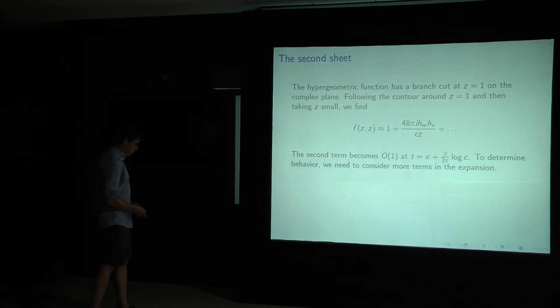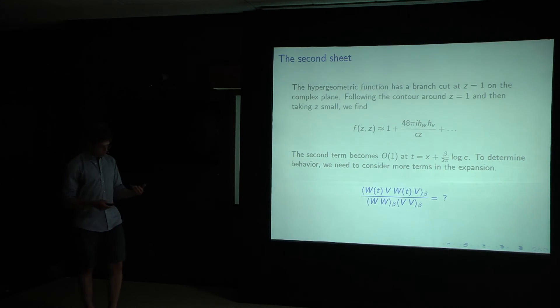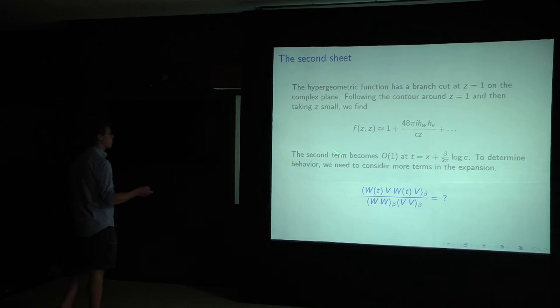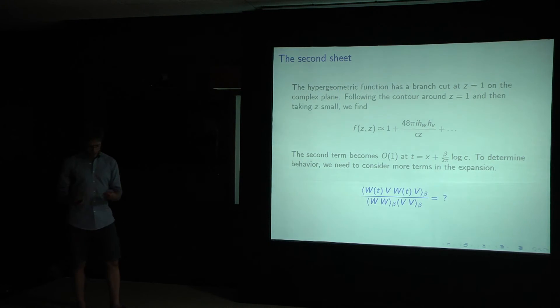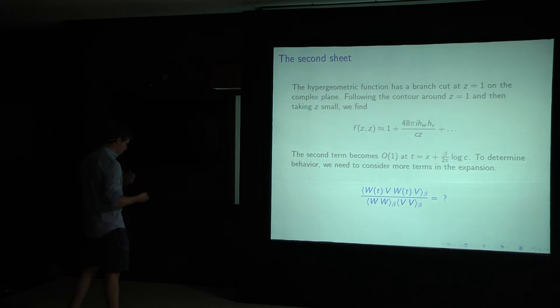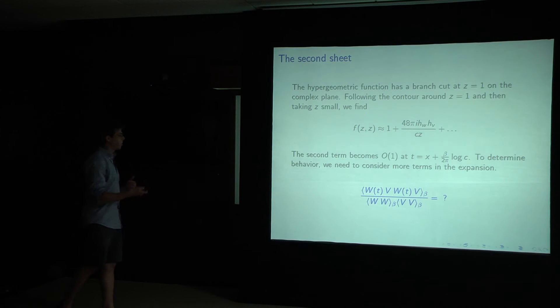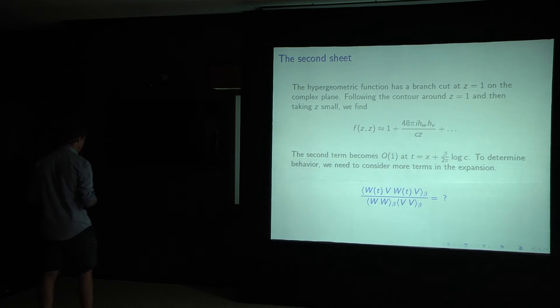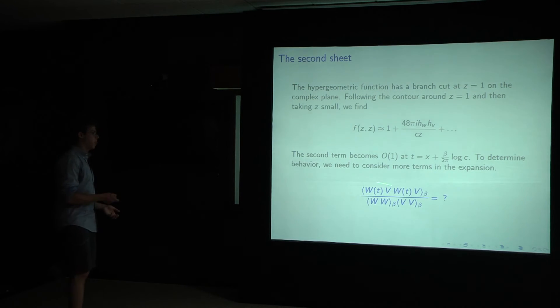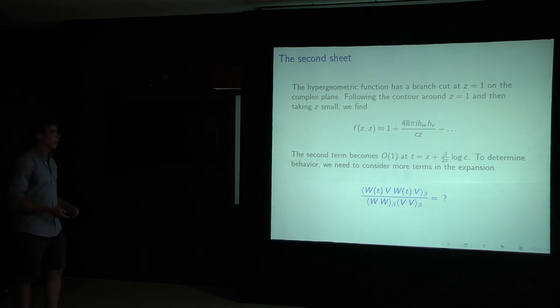So to actually determine the behavior, we need to consider more terms in the expansion. And this is out of control. That sort of makes sense, because I've put in really no input other than the universal, you know, the contribution of the stress tensor. I've put in no input as to what theory I'm considering. And so we should imagine that this depends on, for instance, whether the theory is chaotic or not.